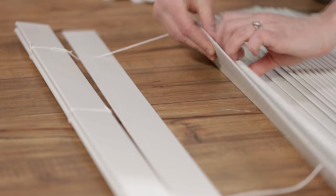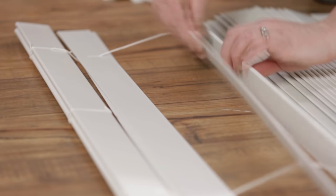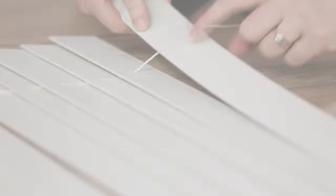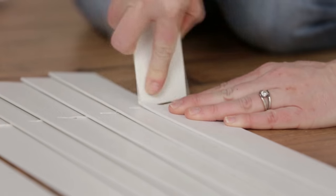The slats will need to be 7 inches apart. Divide the length of your window in inches by 7 to determine how many slats you'll need. Snap off the slats you don't need.